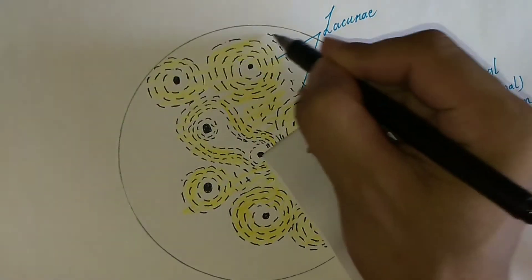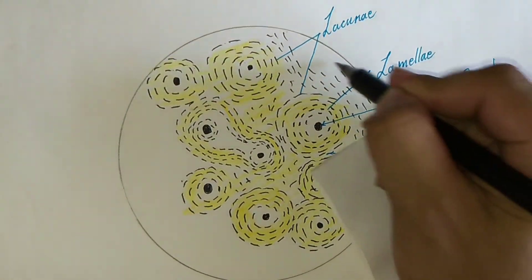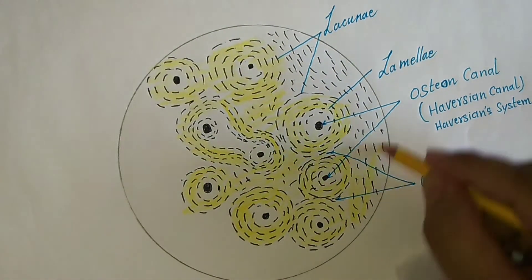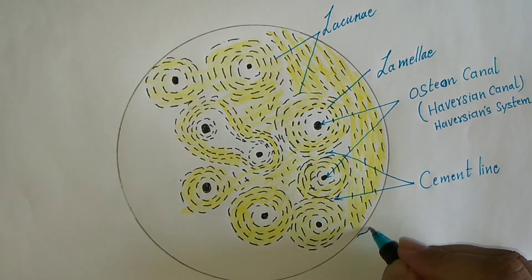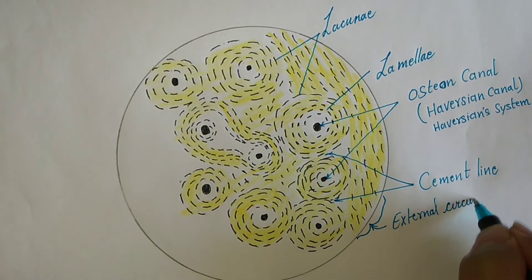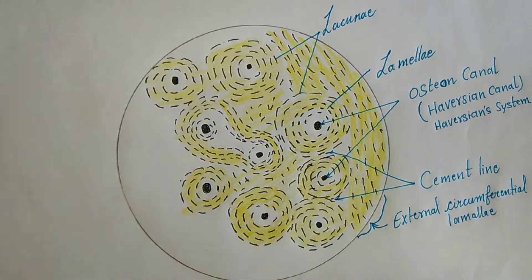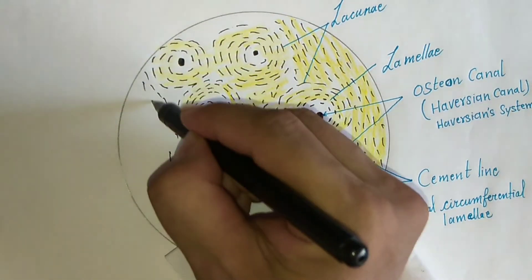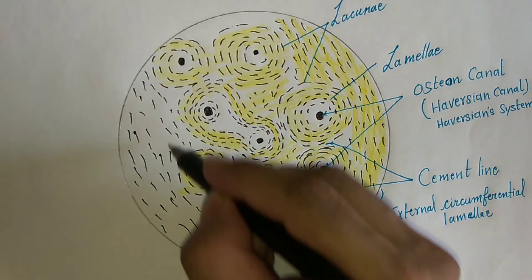In long bone, the outer circumferential lamellae are deep to the surrounding connective tissue called periosteum. External circumferential lamellae form the external wall of compact bone beneath the connective tissue periosteum and run parallel to each other and to the long axis of the bone. The concentric lamellae surround the canal that contains an artery, vein, nerves, and loose connective tissues.